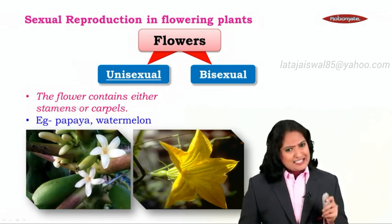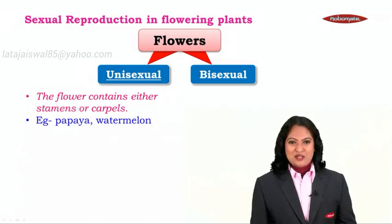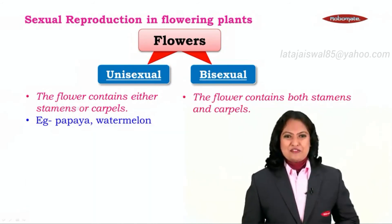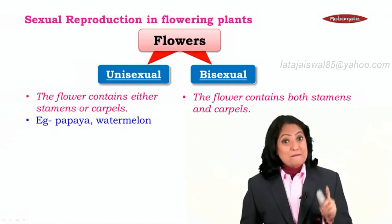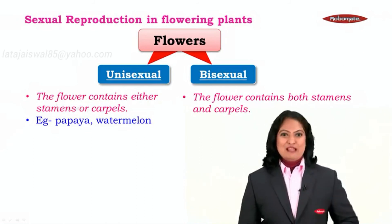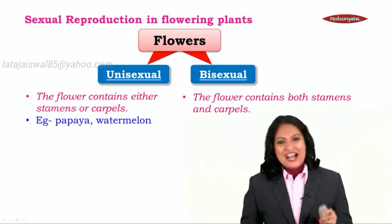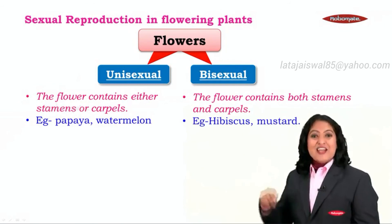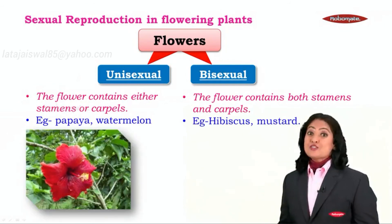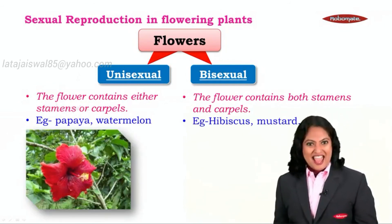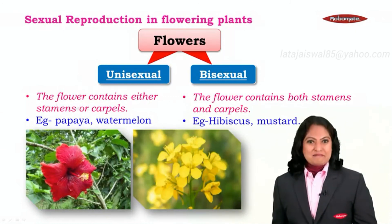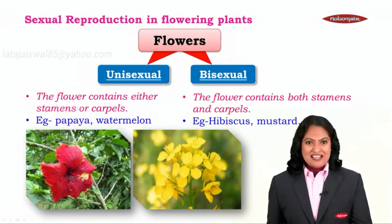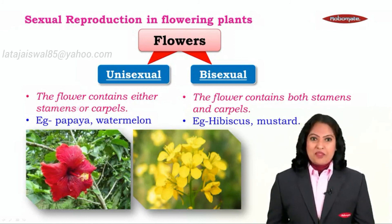Exactly opposite to this are bisexual flowers. The very word 'bisexual' means the flower will contain both the male as well as the female part — it will have both stamens as well as carpels. Examples of bisexual flowers are the hibiscus, commonly referred to as the shoe flower, and the mustard plant.